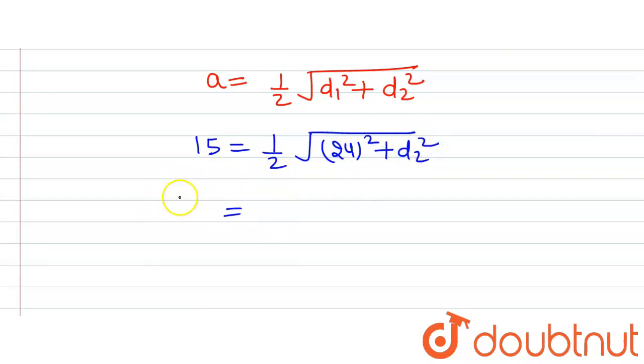Now let's simplify it. So 15 multiplied by 2 will equal the square root of 576 plus D2 squared. 24 raised to the power 2 is 576, so 30 equals the square root of 576 plus D2 squared.